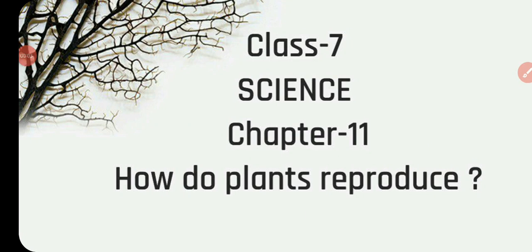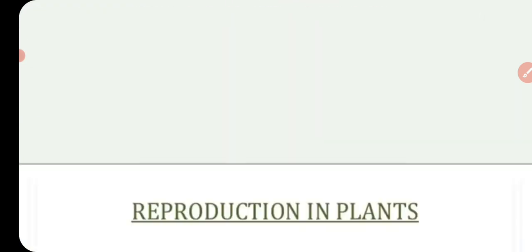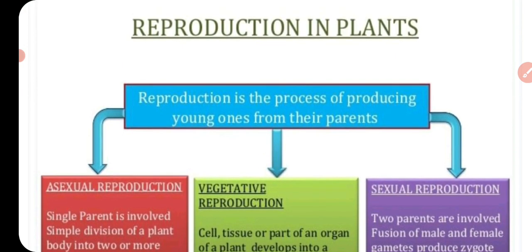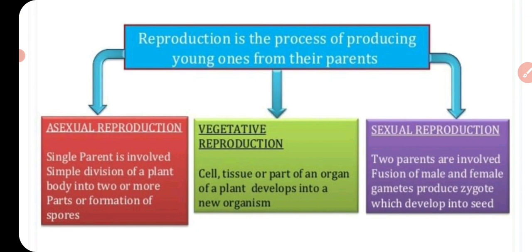Hello students, this is a revisional video for Class 7th Science. The name of the chapter is 'How Do Plants Reproduce.' Reproduction is the process of producing young ones from parents. It is a characteristic feature of all living organisms — every living organism produces new organisms similar to itself.